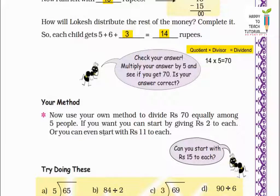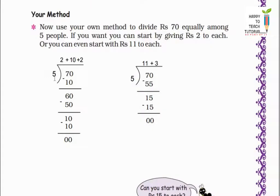So let's try to solve this problem with both methods. Here I start by giving 2 rupees to 5 people. So 5 into 2 equals 10. Now I am left with 60 rupees — 60 rupees abhi bhi 5 logon mein baantne baaki hain. Next I give 10 rupees more to each, so 5 into 10 equals 50. 60 minus 50 equals 10. So next I give 2 rupees more to each. 5 into 2 equals 10. Now nothing is left, remainder is 0, meaning all money is distributed equally.